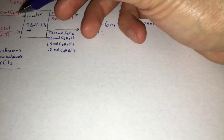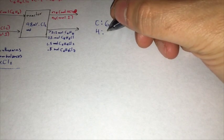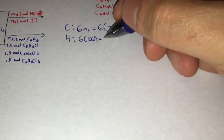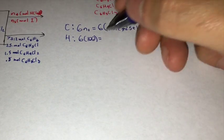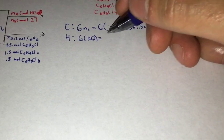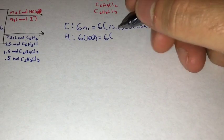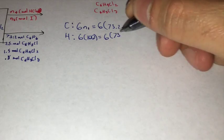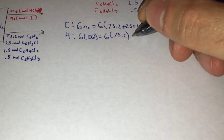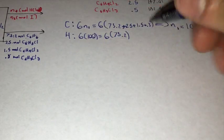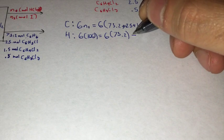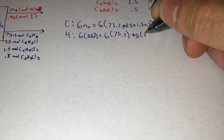And now we move on to H, so we have six H going in, times N1, which is 100, so six times 100 is going to be equal to six hydrogens here. We have six hydrogens times 73.2 plus four hydrogens times 25.